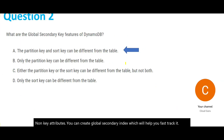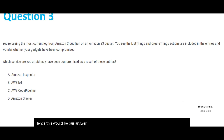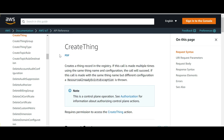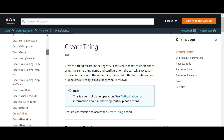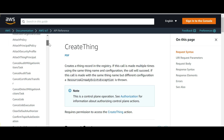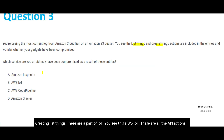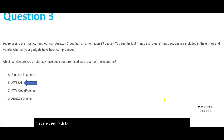So the Global Secondary Index would be our answer for that question. The next question is around API actions. If you see 'list things,' 'create things' — these are API commands. These are part of AWS IoT. All these API actions are used with IoT, so it is pretty clear that IoT is the answer.